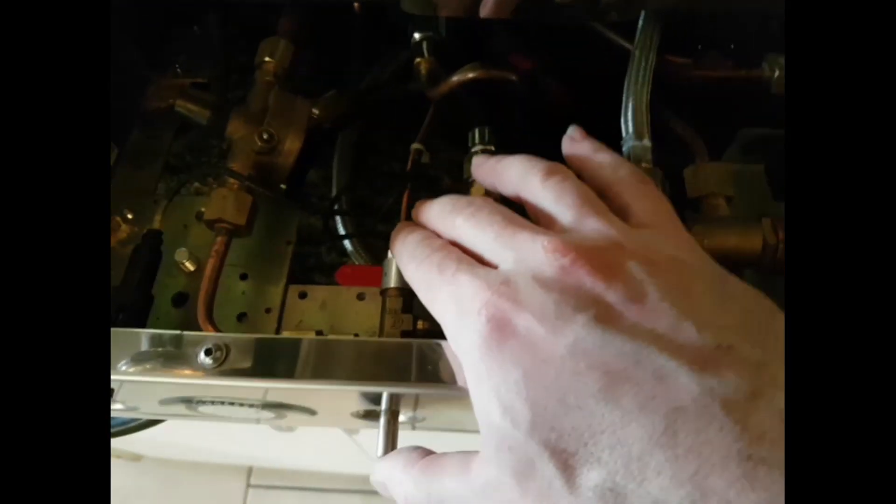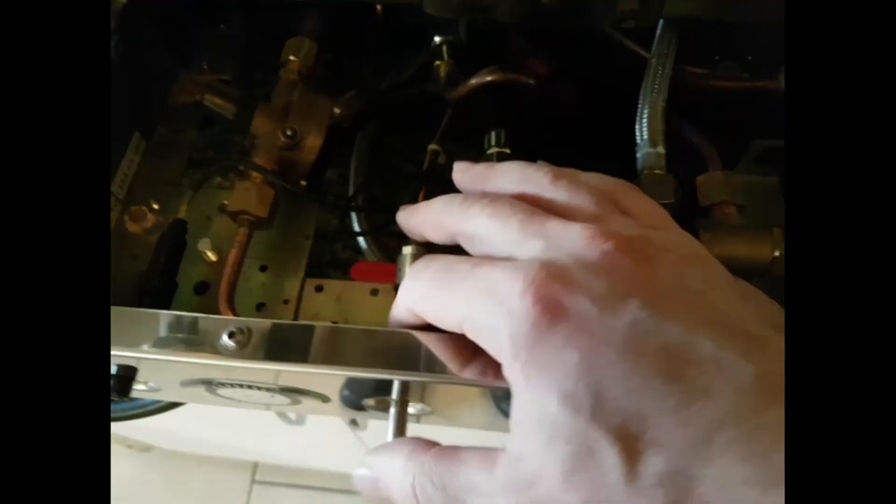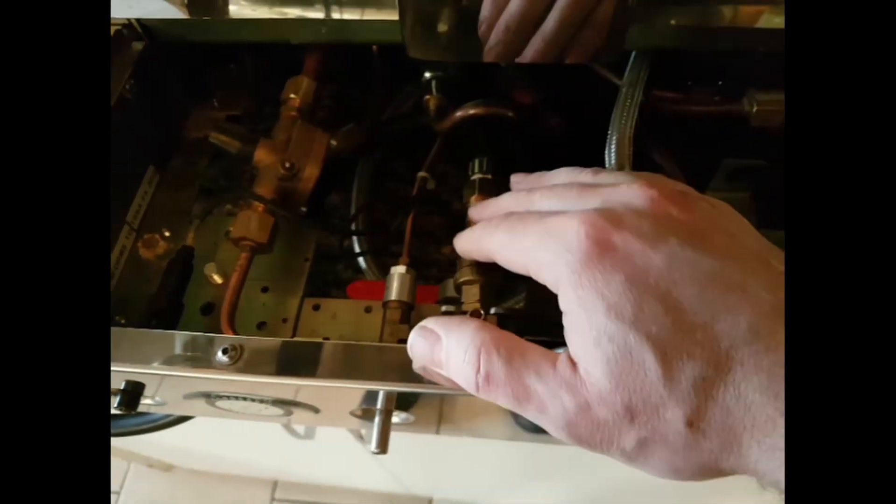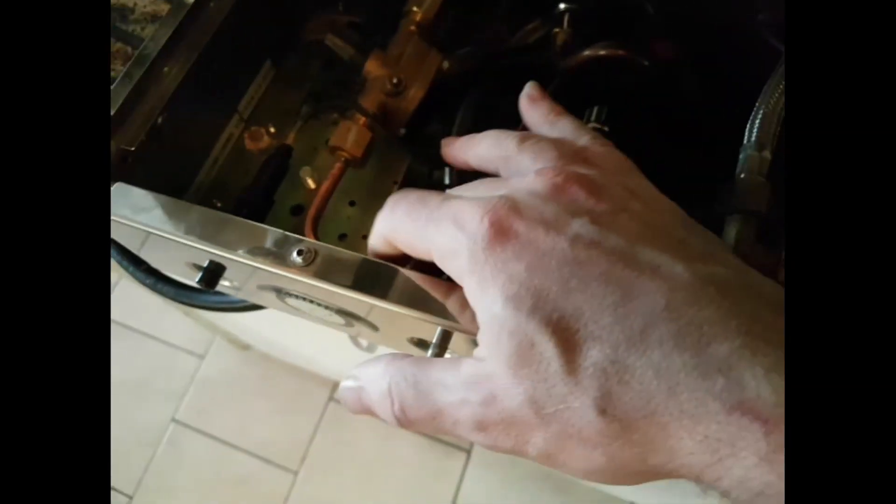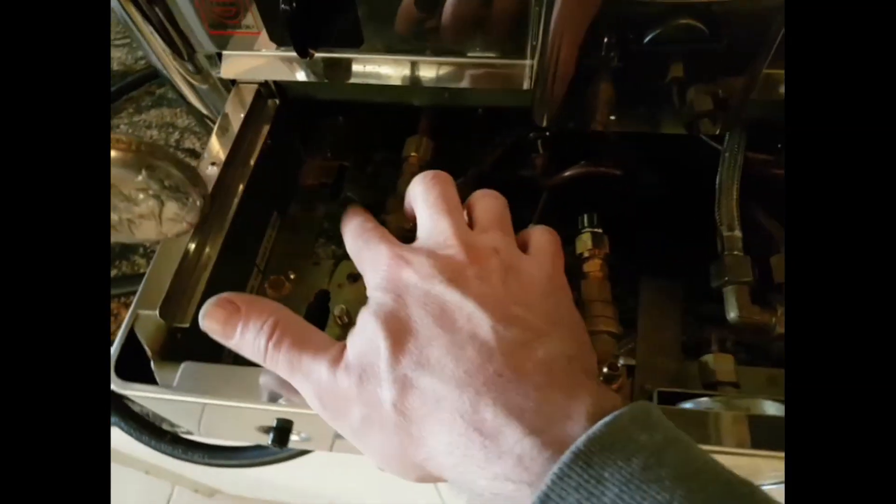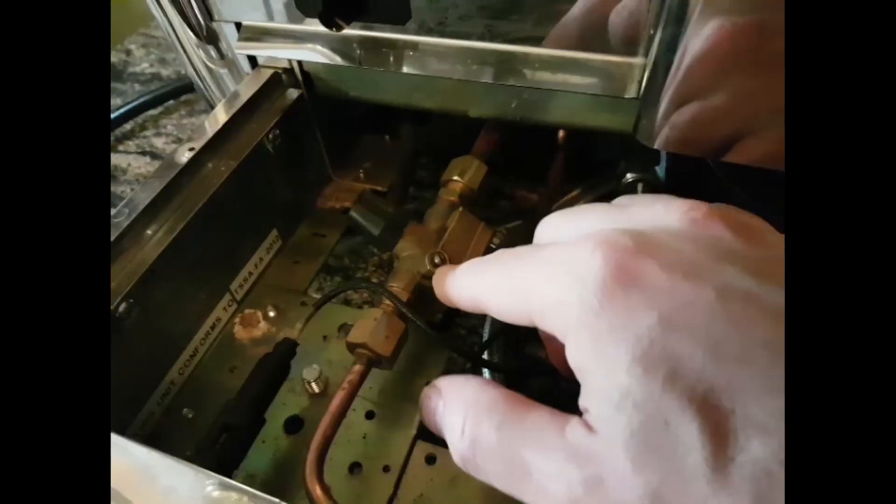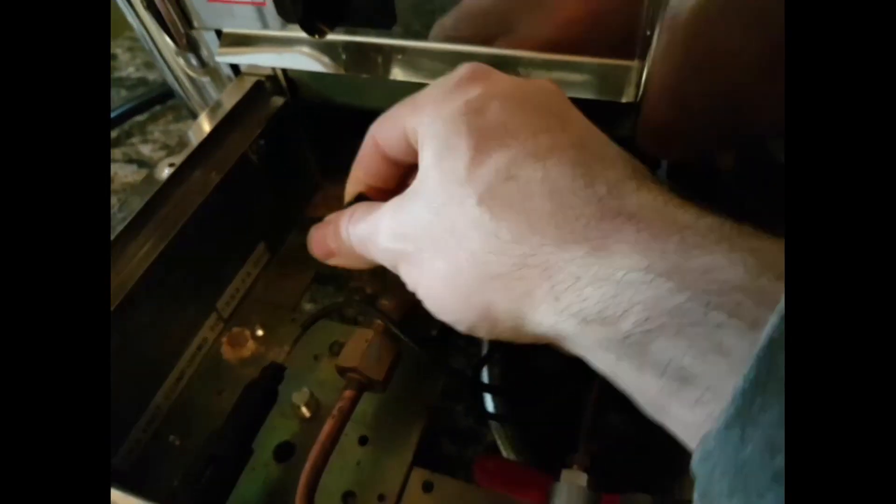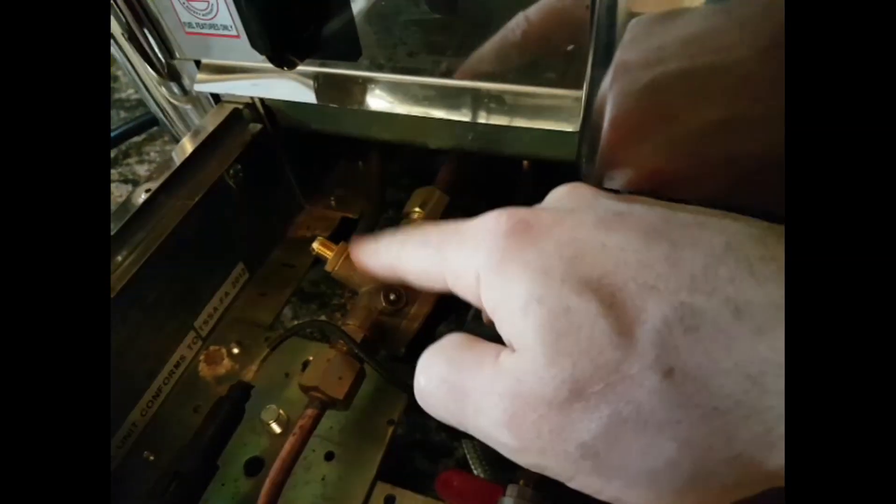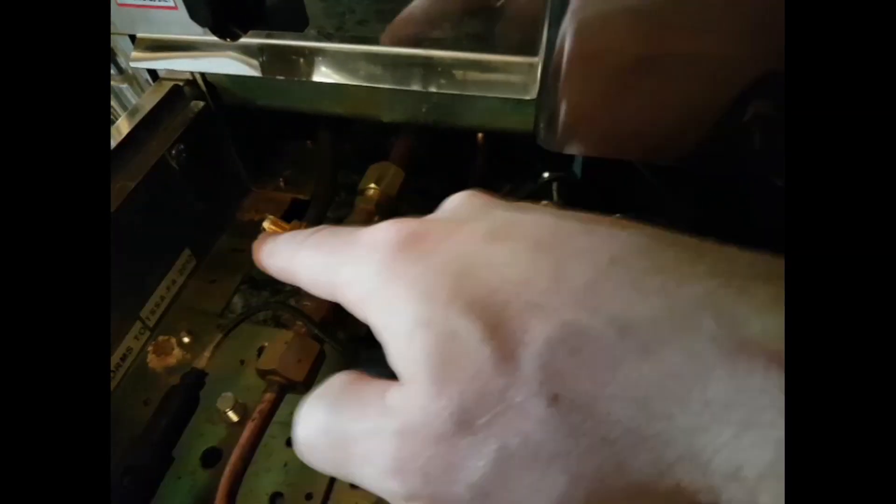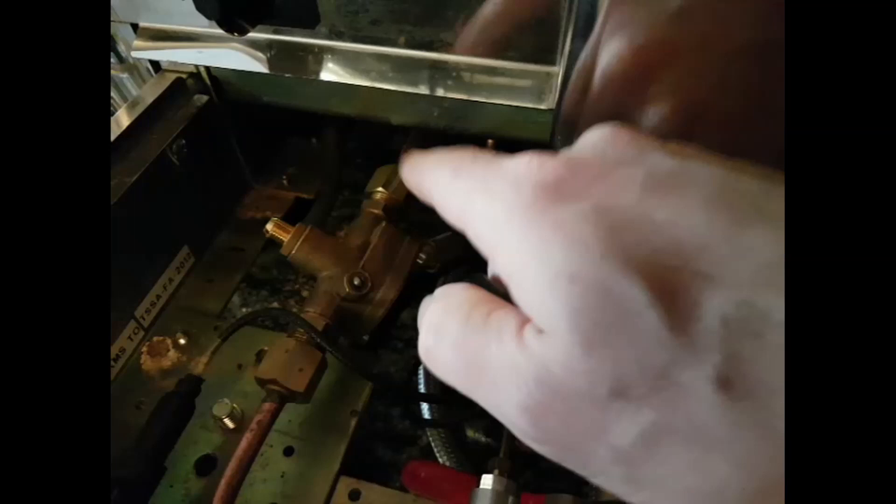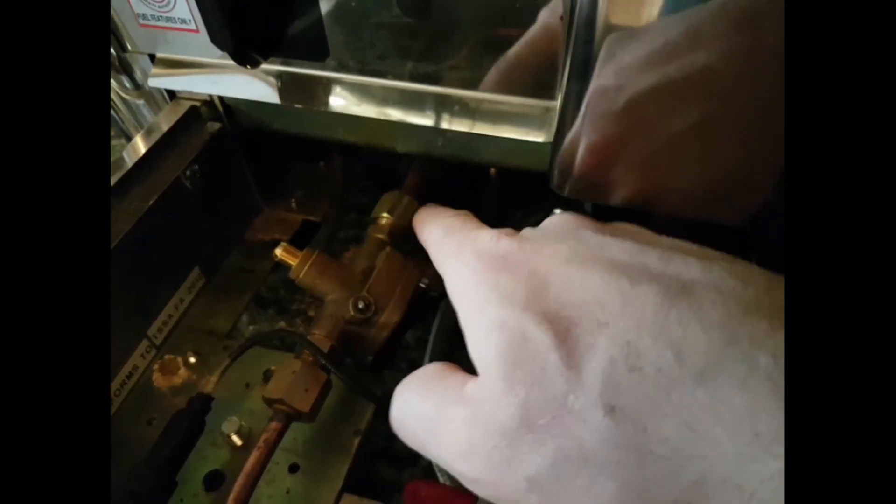And then from there it goes to what's called a safety shutoff. This is a device that is designed to shut off the flow of fuel to your regulator in the event that the flame is snuffed out. From the safety shutoff, it goes to your regulator and there's two adjustments here. This is basically your idle flame size. And then this will adjust your equilibrium point at which the steam pressure will throttle the regulator back and cut the flame down to idle.